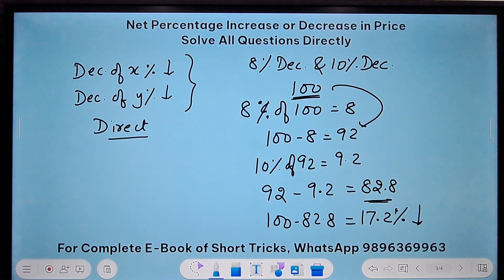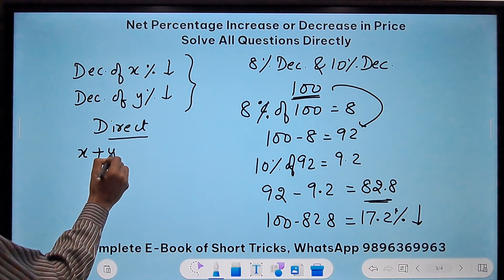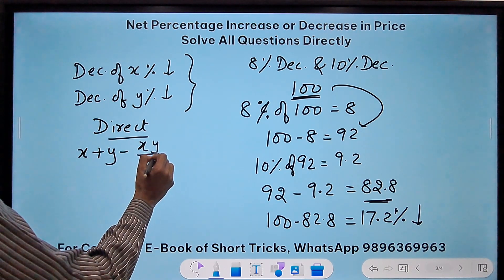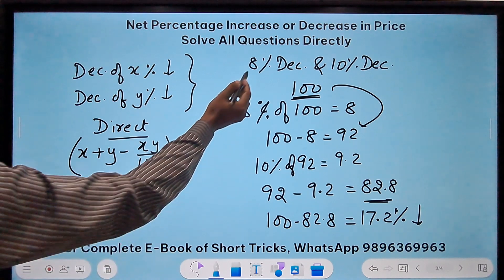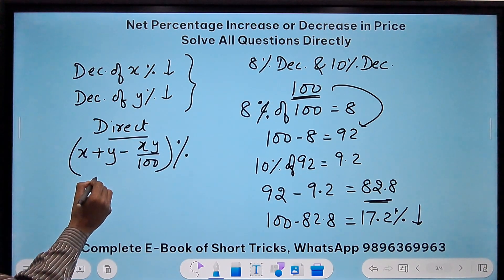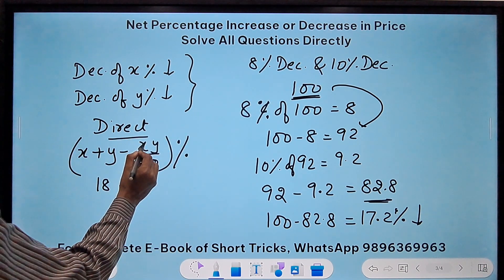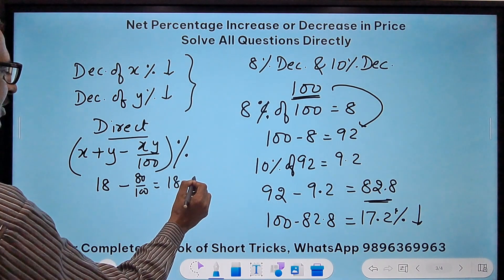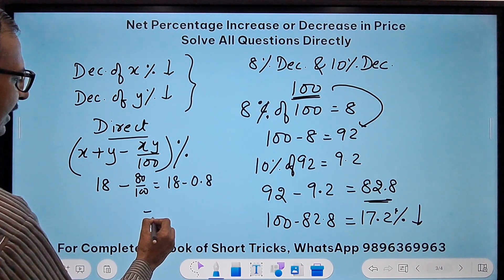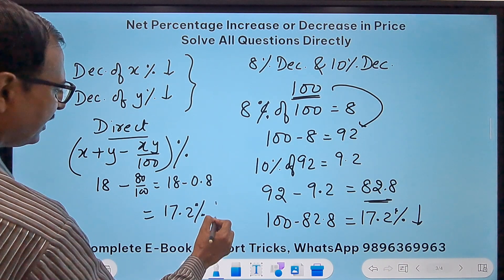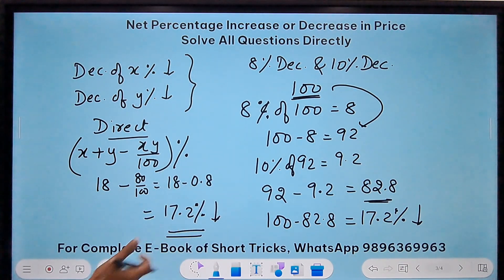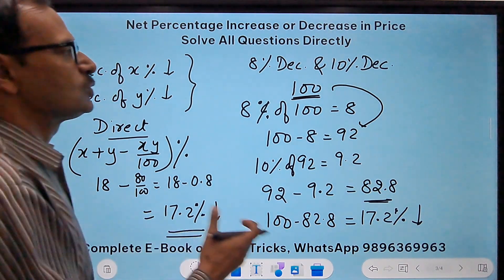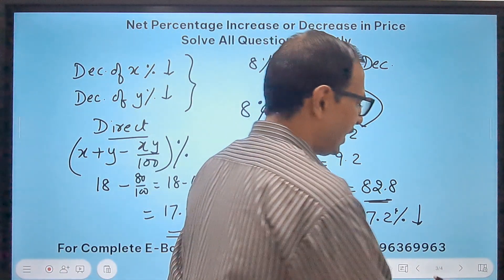Now let's see the direct short trick for this. If I want to use the direct short trick, I will do the sum of x and y, then subtract xy upon 100 from it to get the answer directly. Let's put the values 8 and 10: 18 minus 8 into 10, 80 upon 100. So 18 minus 0.8, that is exactly 17.2 percent decrease. See how quickly we get the answer and how much time you can save using these amazing short tricks.